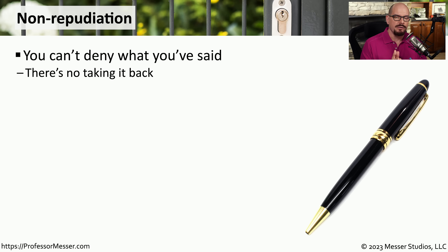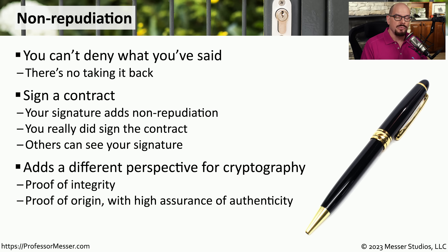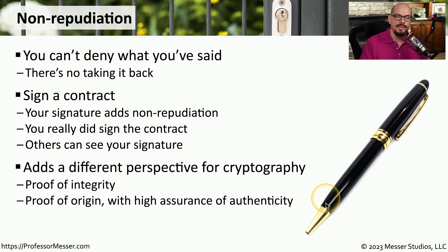One of the important foundations of cryptography is ensuring that when someone sends data to a third party, that third party is able to verify that the information really came from the sender. This is something we think of as part of a contract — we sign it at the bottom with our name and signature. Just like a signed contract, we have similar features in cryptography. Today we'll look at how non-repudiation works using proof of integrity and proof of origin with high assurance of authenticity.